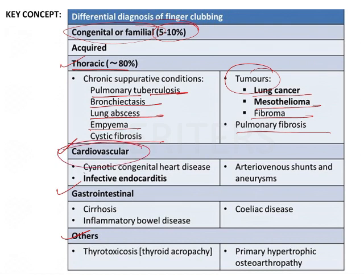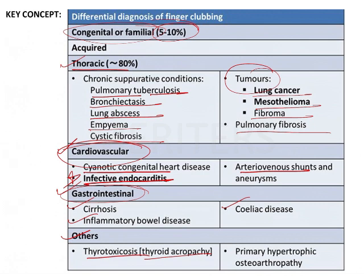Cardiovascular causes include cyanotic congenital heart disease, infective endocarditis, and arteriovenous fistulas. Gastrointestinal causes include celiac disease, inflammatory bowel disease, and cirrhosis. Other causes include thyroid acropathy — that is thyroid toxicosis — and primary hypertrophic osteoarthropathy.